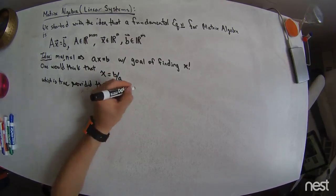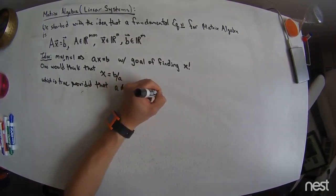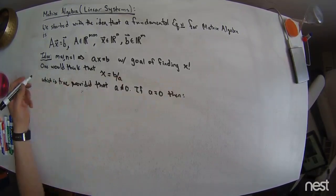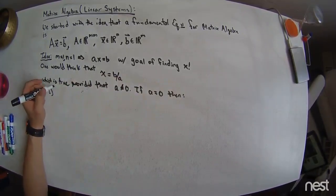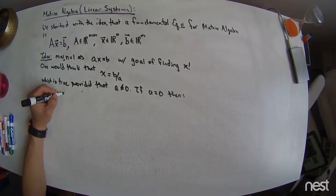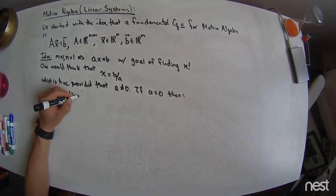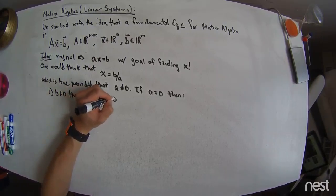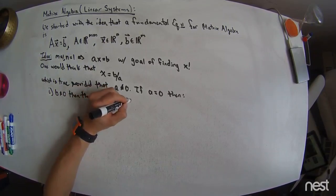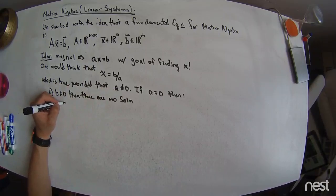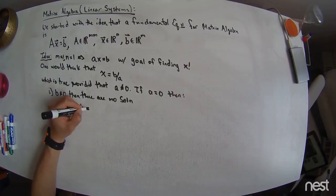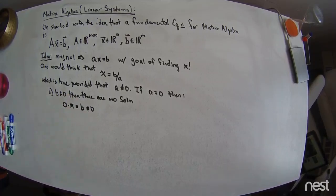All right, if a is equal to 0, then two things could happen. Thing one, if b is not equal to 0, then there are no solutions. Because what does the equation look like? It really looks like 0 times x equals b, which is not 0. And so there's no x that can satisfy this equation, right?